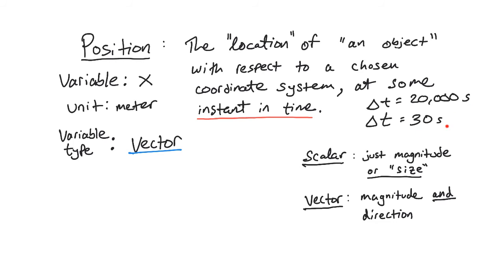And that would be an example of a scalar quantity, time interval, that has a much larger magnitude or a much larger size, 20,000 seconds versus 30 seconds. So in the same way, vectors will have magnitude as well. They'll have a certain size to them. But they will also include direction. And we'll see how to do that.